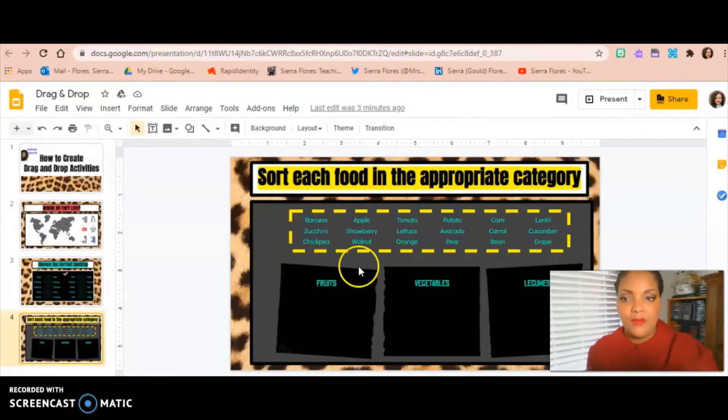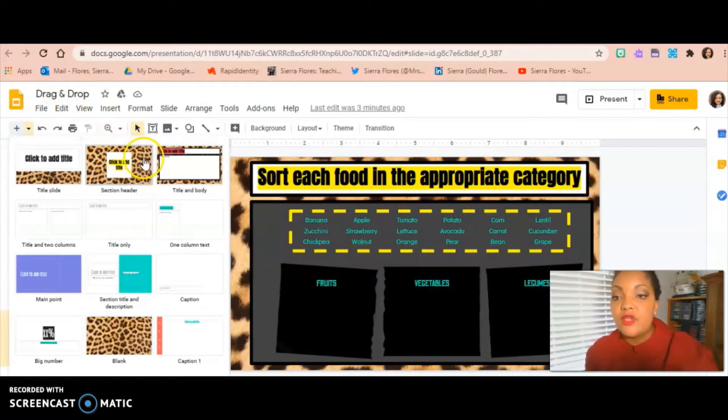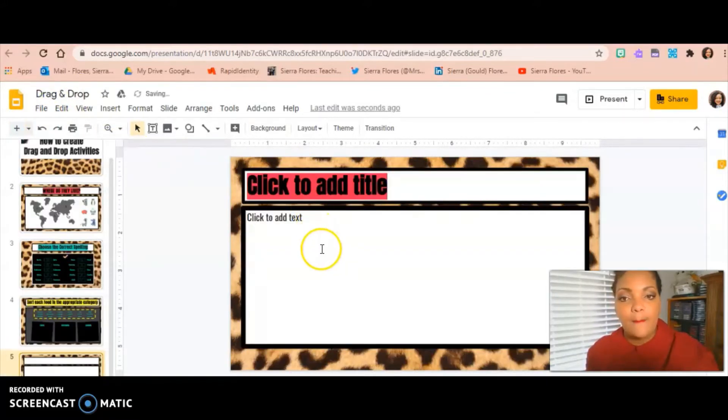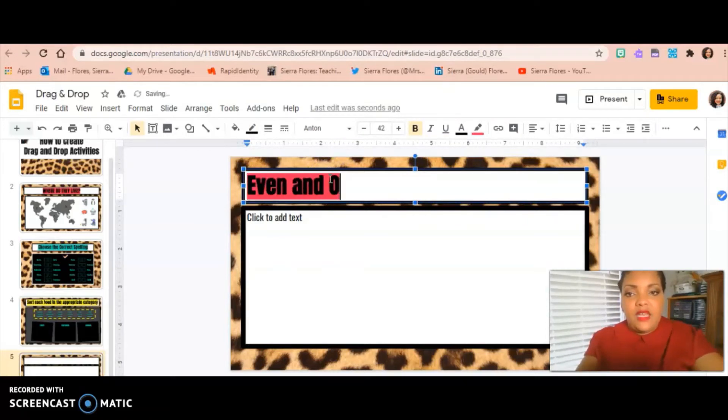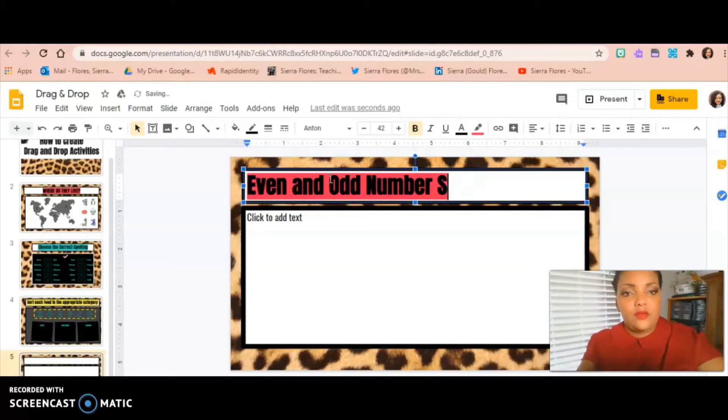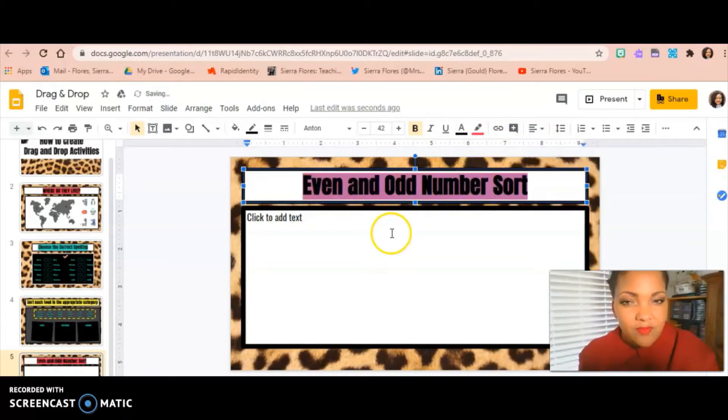And so I'm going to press escape on my slides and I'm going to insert a new slide so that I could begin showing you how I create a drag and drop from scratch. So I'm going to go ahead and give mine a title. It's going to be a math theme today, so it's going to be even and odd number sort. There we go. I'm going to make that centered because it's bugging me that it's not in the middle.